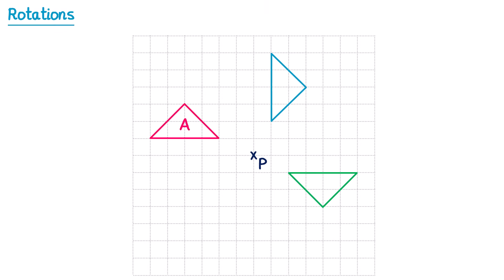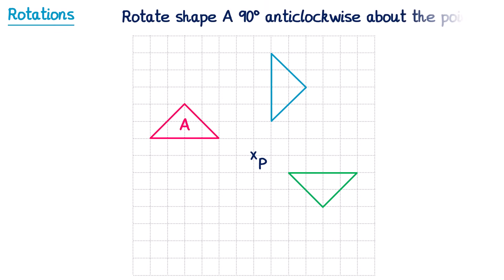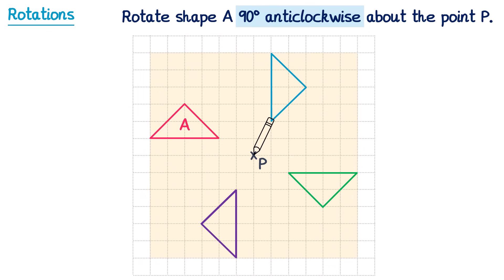And of course it could have said to rotate it 90 degrees anticlockwise. Once again, we trace around the shape, place the pencil onto the point P, and then we'll turn it one quarter of a turn — but anticlockwise, so in the opposite direction this time. The final shape will end up here; we remove the tracing paper and draw the shape in that position.